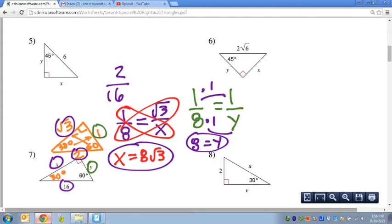So x equals 8 radical 3, and y equals 8. So it's really that simple. There's nothing really complicated to it.